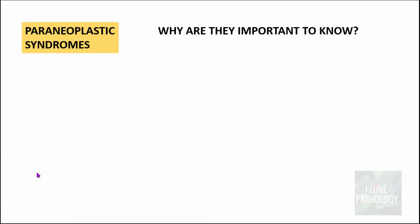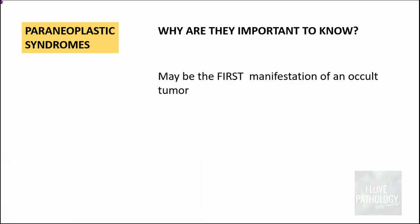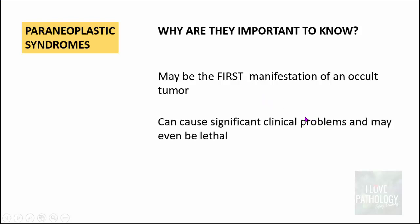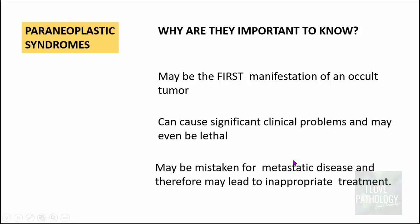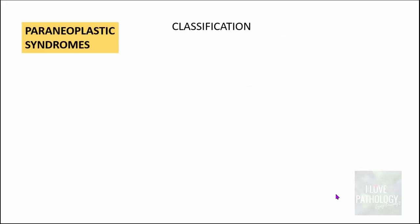It is important to know about paraneoplastic syndromes because they may be the first manifestation of an occult tumor. They can cause significant clinical problems, may be lethal, and can be mistaken for metastatic disease, potentially leading to inappropriate treatment. For example, a patient presenting with Cushing's syndrome may turn out to have an underlying lung cancer.